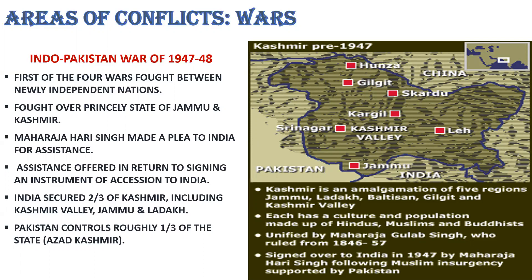India offered help in return for his signing an instrument of accession to India. The Maharaja signed it and Indian troops were sent. The war officially ended on January 1, 1949, when the United Nations arranged a ceasefire — a truce between the two countries. However, it resulted in India securing two-thirds of Kashmir, including Kashmir Valley, Jammu and Ladakh. Pakistan controls roughly one-third of the state, referred to as Azad Kashmir.